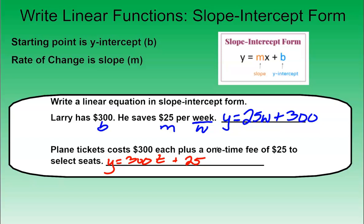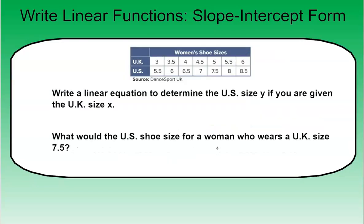A couple other examples. It says write a linear equation to determine the U.S. size y if you are given the U.K. size x. So we need to write the linear equation for this one. So we're going to start with y equals. Now for this one, we don't know what the slope is.